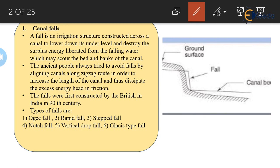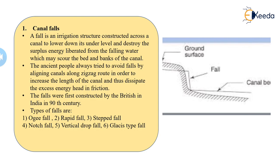The glacius type fall utilizes the standing wave phenomena for dissipation of energy, recognizing the hydraulic jump as a potent means of destroying the energy of canal falls. It generally consists of straight or parabolic glacis shapes. Under this type, we also have the English fall. By providing these various fall structures, we control and discipline the kinetic energy of the flowing water in the canal.